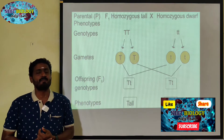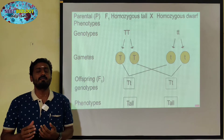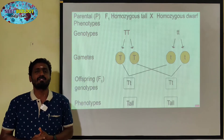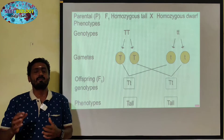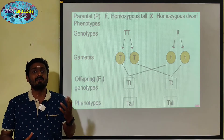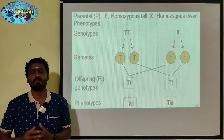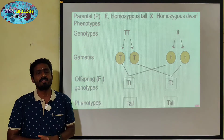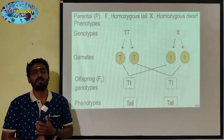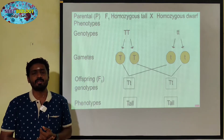The pollen can be considered as the male part of a flower. Likewise, the stigma consists of the female part of a flower. With male as tall and female as dwarf, the monohybrid cross gives 3 is to 1 phenotypic ratio and 1 is to 2 is to 1 genotypic ratio.